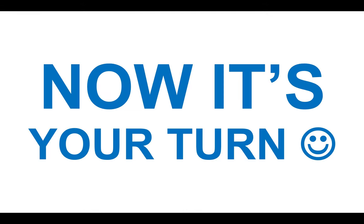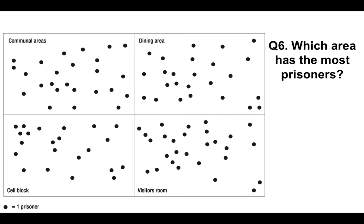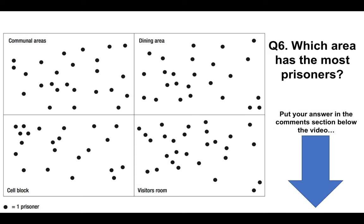Question six — now it's your turn. This is a different image from before. Each dot represents one prisoner. We've got communal areas, dining area, cell block, and visitors room. You will have to pause the video to count the number of prisoners. Which area has the most prisoners? Put your answer in the comments section below. Add up how many prisoners are in each particular area, and when doing the real online test, write down each section's count as you'll need to refer back to them for further questions.